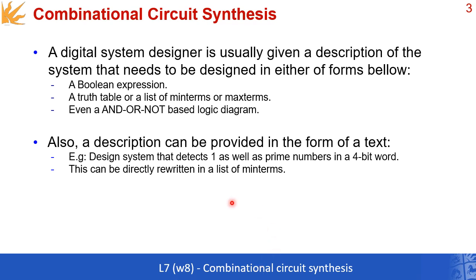Suppose that you're given a design of a system as something to create, and your task is to make this design detect 1 and prime numbers. Now pay attention: in a 4-bit word. From this description you can directly extract the minterms. So we have a 4-bit word, which means that the input has four different variables. Therefore, the minterms that you can have, or the size of the truth table, is 2 to the power of 4. This gives you 16 different combinations.